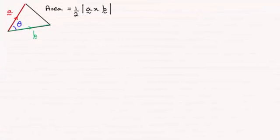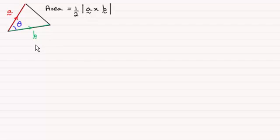Hi there. Now in the previous video I showed you how we could use the vector product to work out the area of a triangle. The area of the triangle was equal to a half the magnitude of the vector product between A and B.